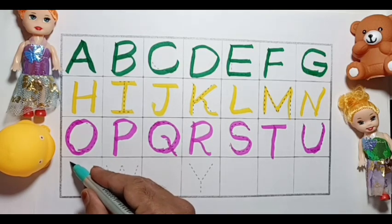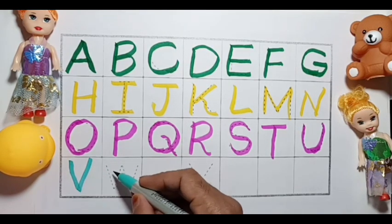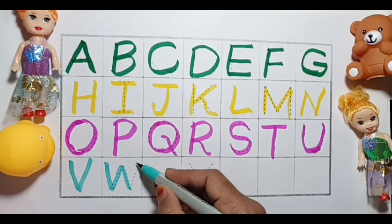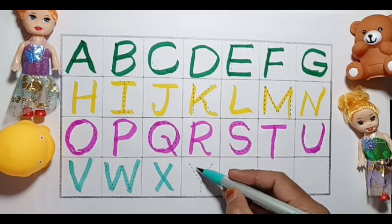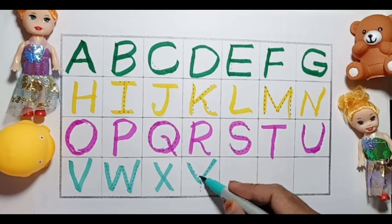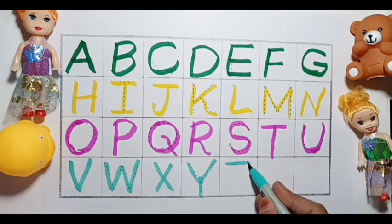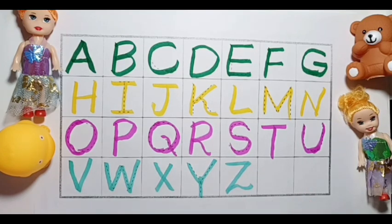V for Van, W for Watch, X for Xmas tree, Y for Yard, Z for Zebra. Thank you.